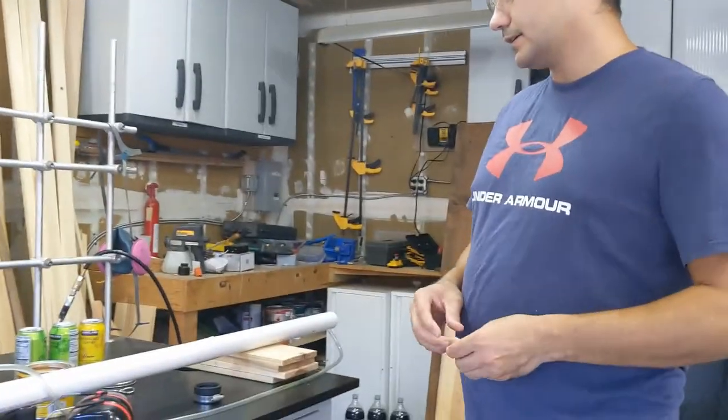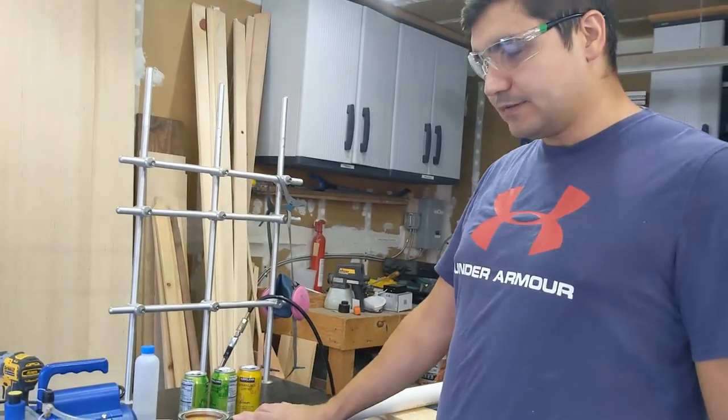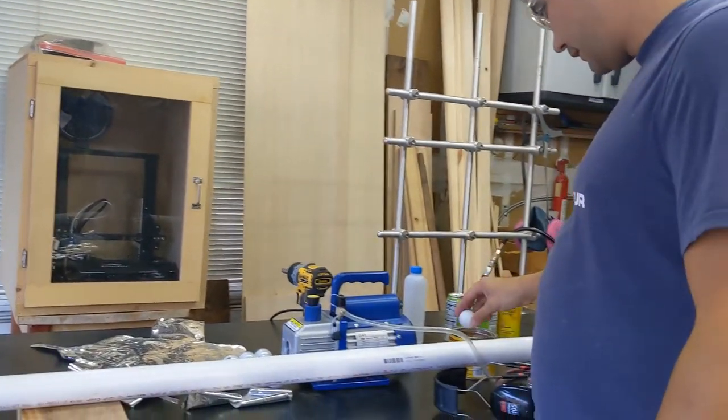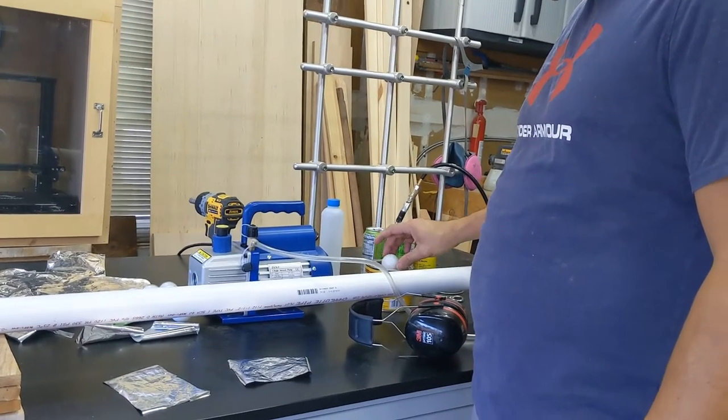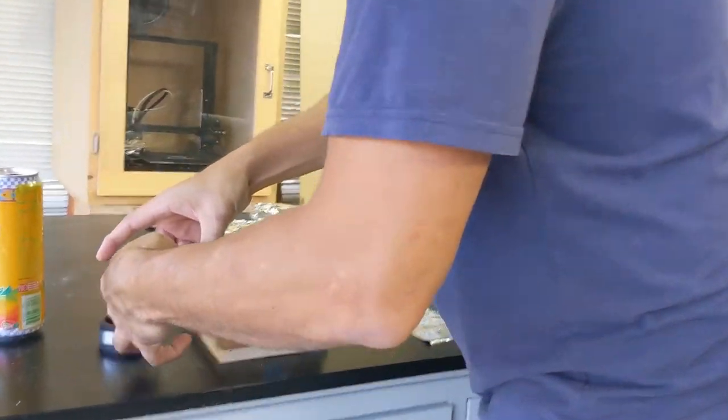We are testing out our vacuum cannon here. All we got is a PVC pipe and we're going to put a ping-pong ball inside it. I'm going to put some wax on my ping-pong ball just to make it slip through this PVC a little easier. It's a nice tight fit in here.